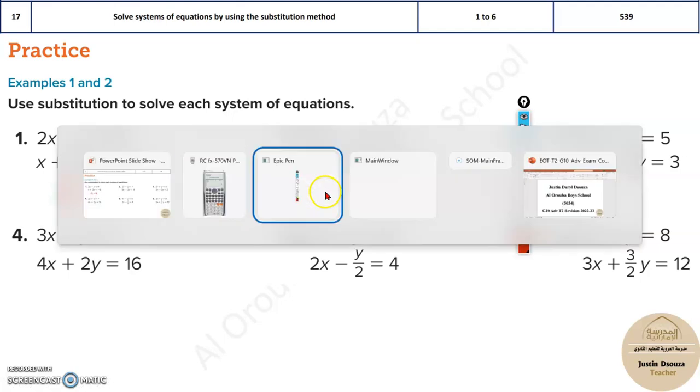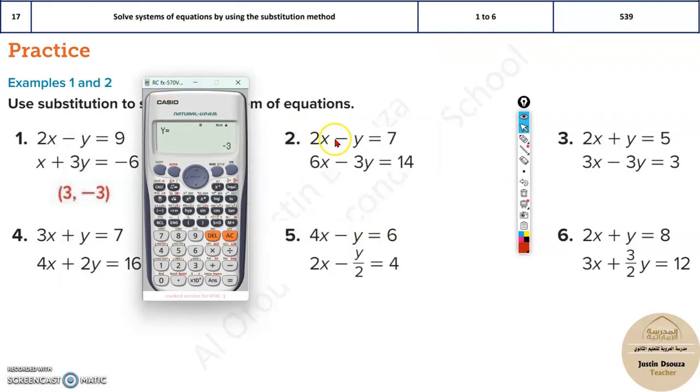But there are some cases where you won't get an answer. Let me solve the next one. That's 2, minus 1, and 7. Then 6, minus 3, and 14. I'm gonna get no solution. This is a computer simulation calculator, but if you use a real scientific calculator, most of the time you will get a math error.